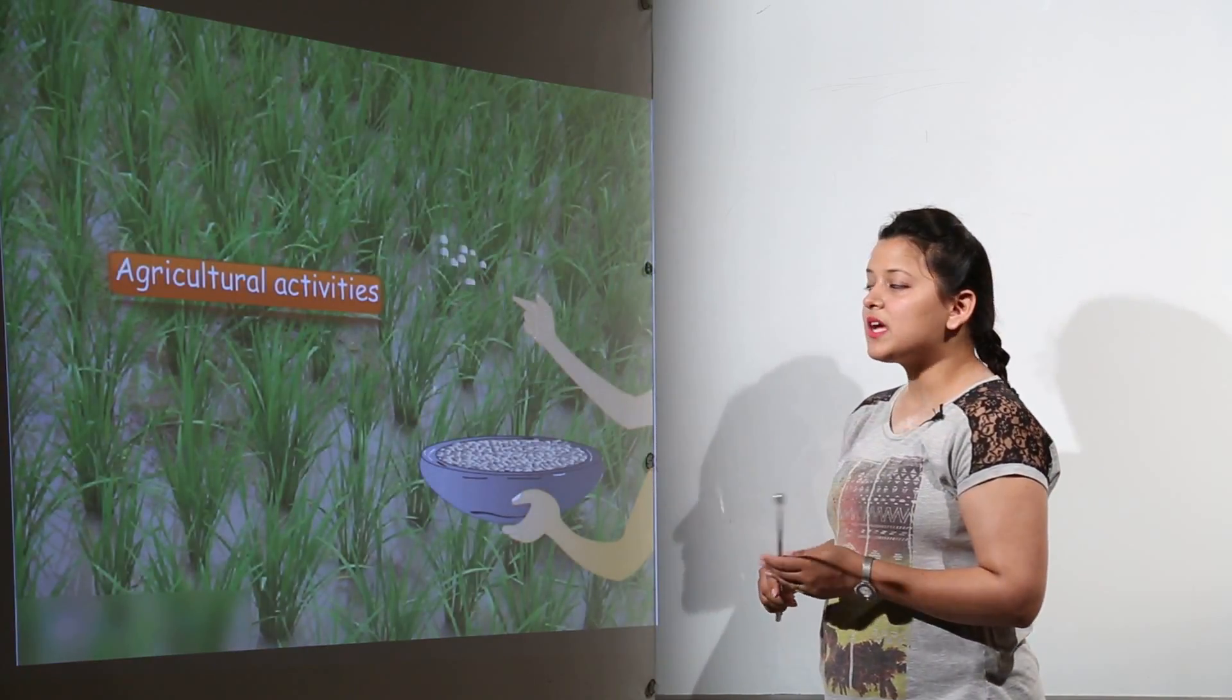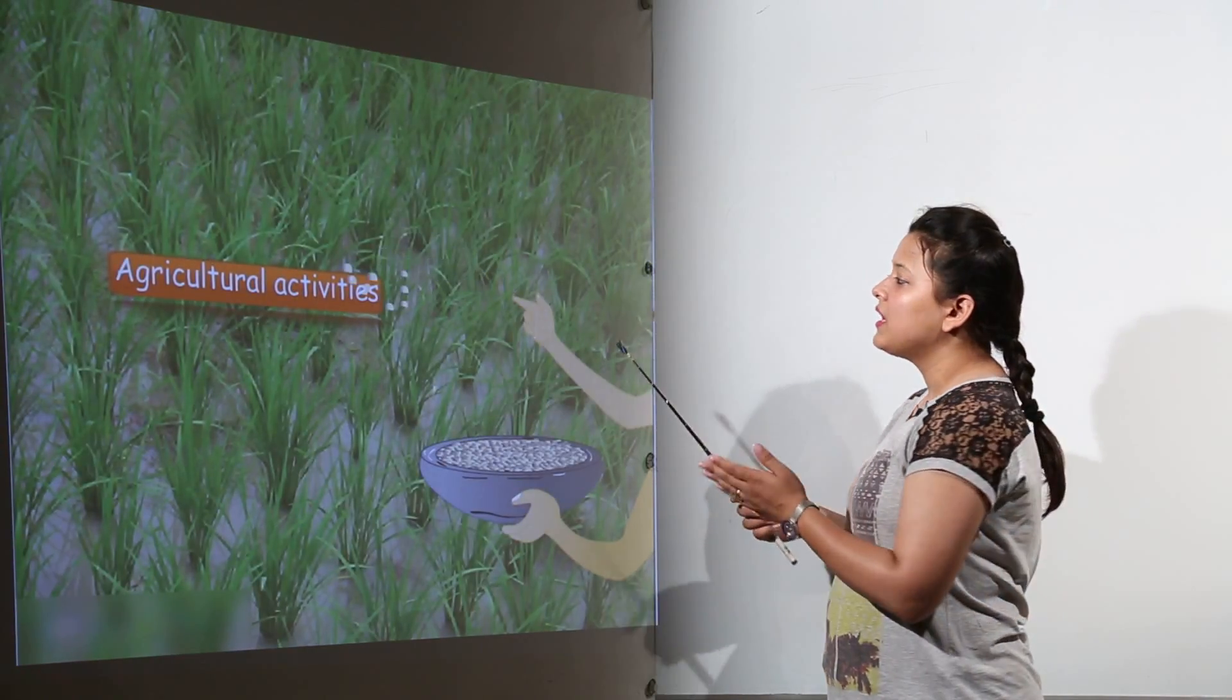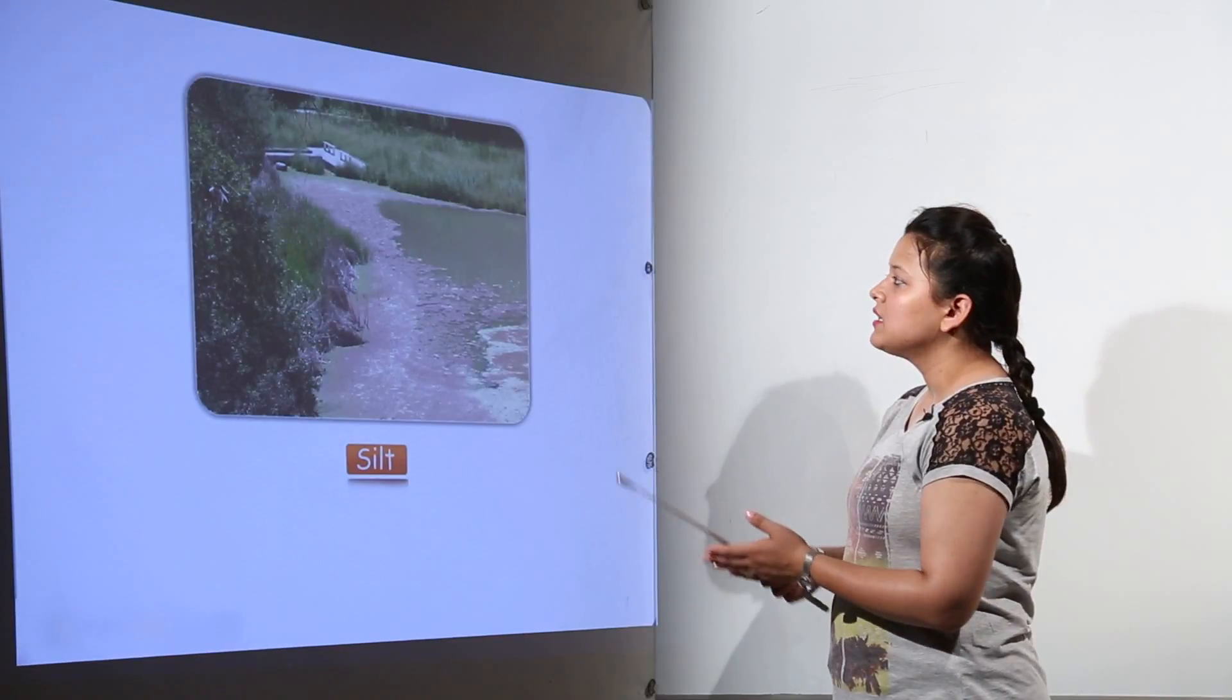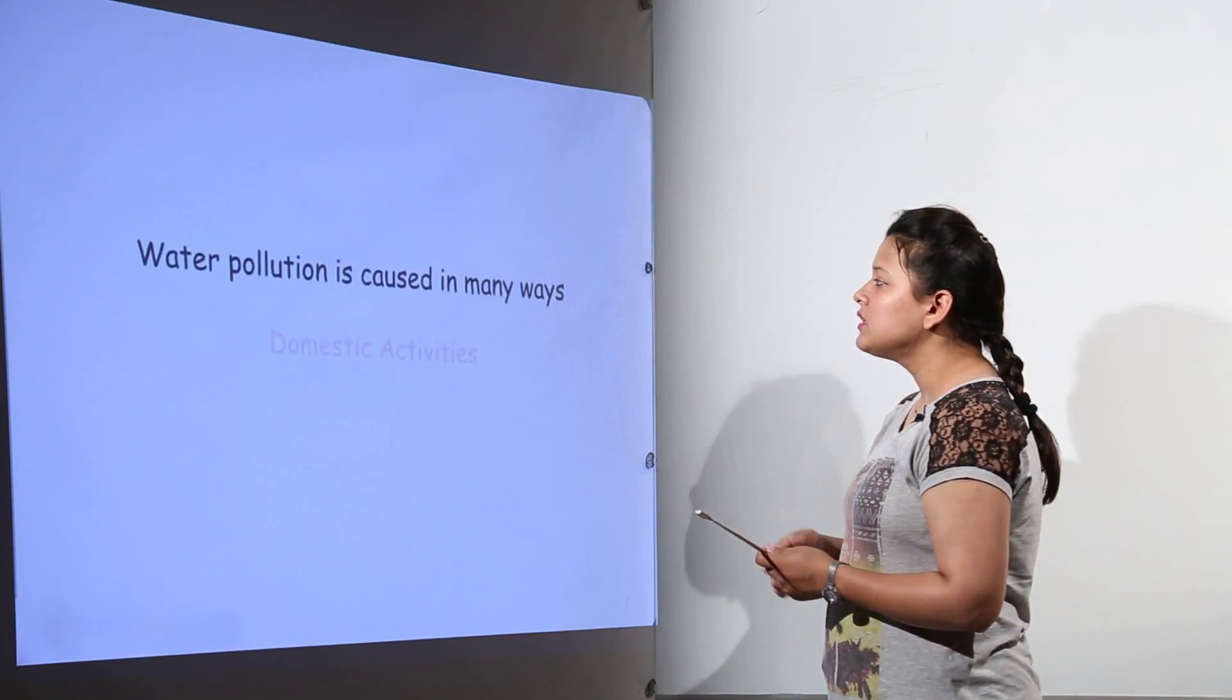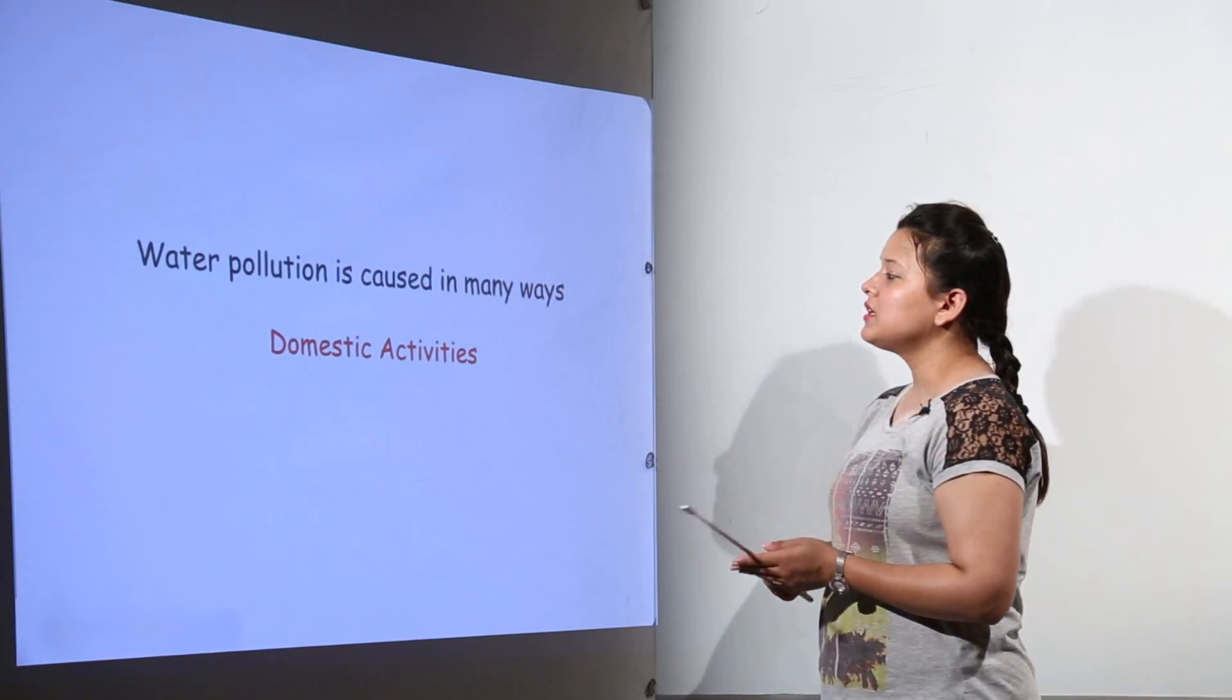That could be due to the sewage that we put into the water, the agricultural activities, the silts that is getting mixed into the water slowly and slowly. So the water pollution is caused in many ways.